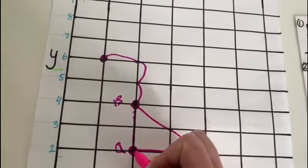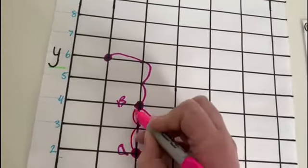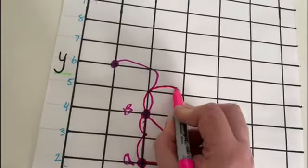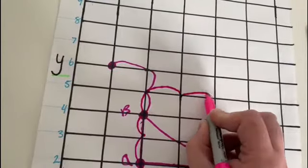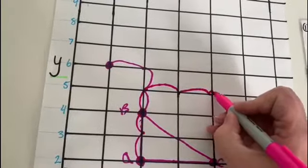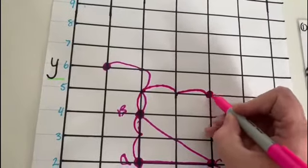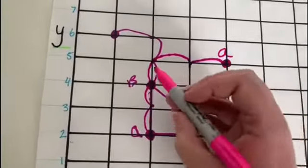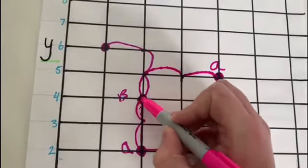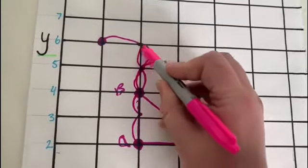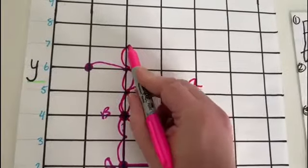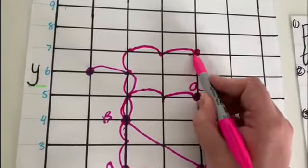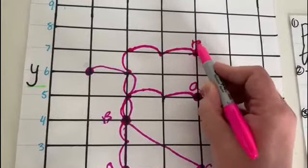I go up 3: 1, 2, 3, and right 2: 1, 2. So this is my new coordinate for point A. I do the same for point B. I go up 3: 1, 2, 3, and right 2: 1, 2. That is now point B.